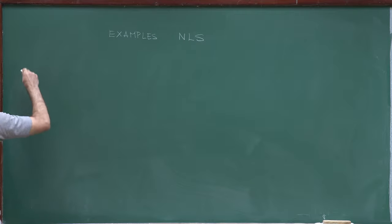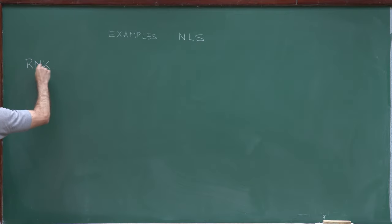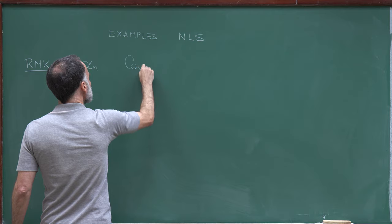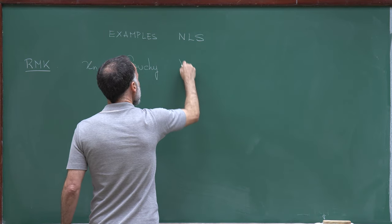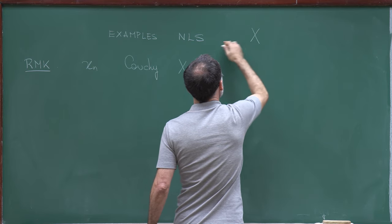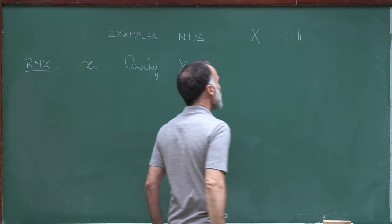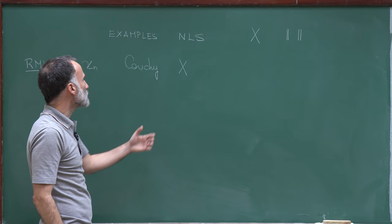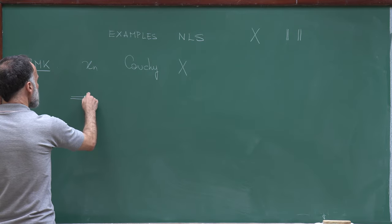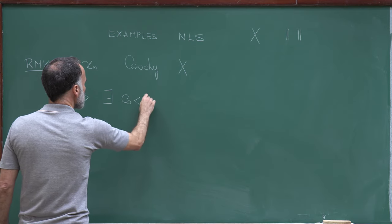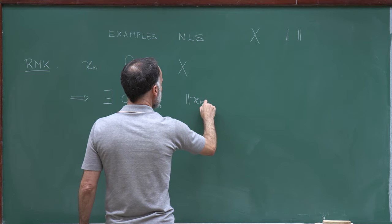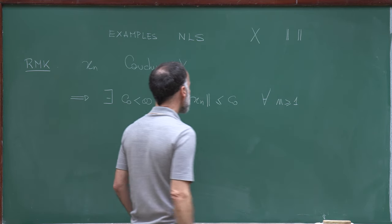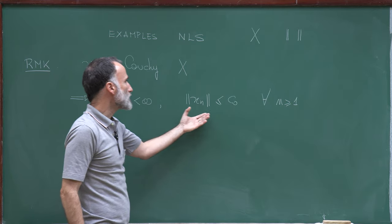Before I start, let me state a remark which will be used many times. Assume that you have a sequence xn which is Cauchy in some space X. In all this lecture, X will be a normed linear space. Assume that xn is a Cauchy sequence on this normed linear space. What I claim is that there exists a finite constant C₀ such that the norm of xn is less than or equal to C₀ for all n ≥ 1. This means that any Cauchy sequence is actually bounded.